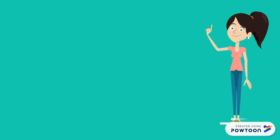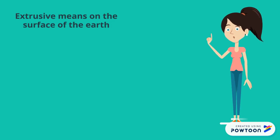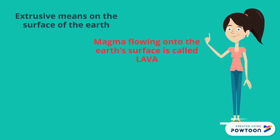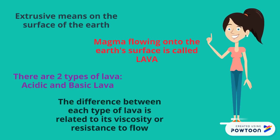The term extrusive means on the surface of the earth. Magma which flows onto the earth's surface is called lava. There are two types of lava: acidic lava and basic lava, and the difference between each type has to do with its viscosity, or resistance to flow.